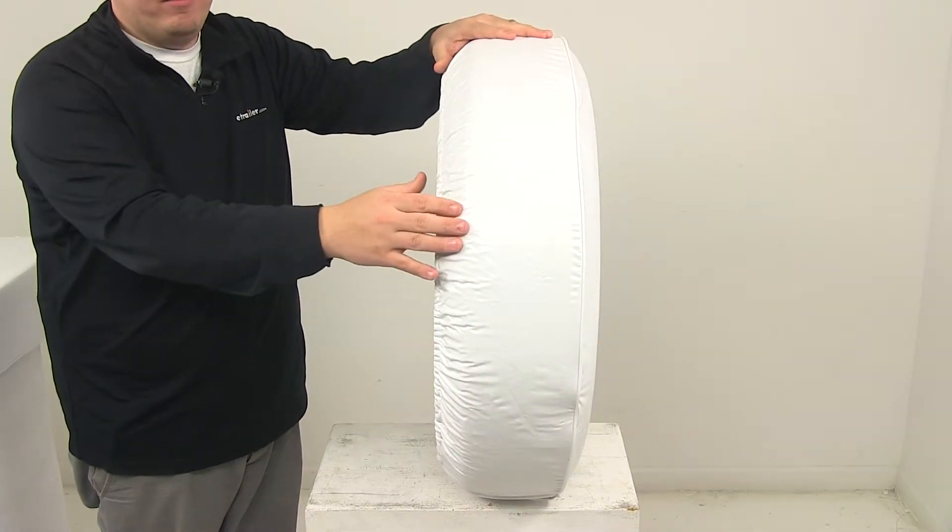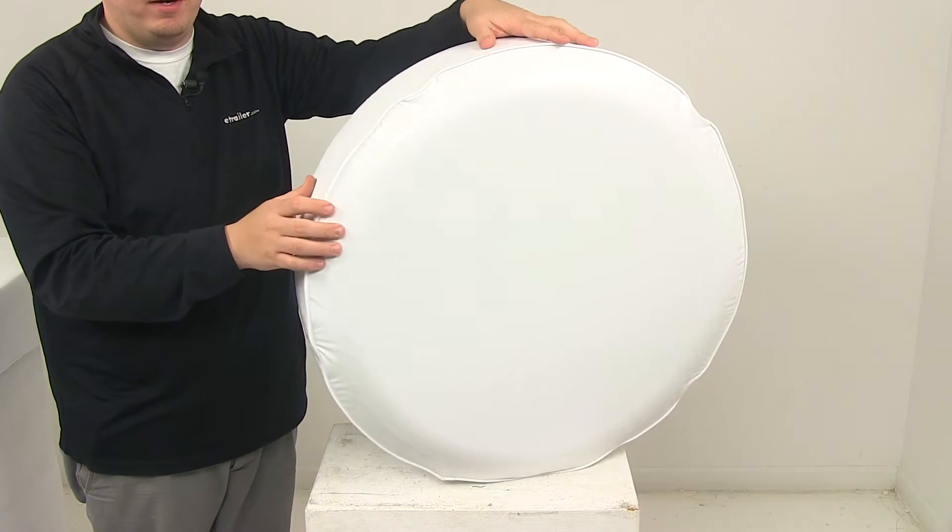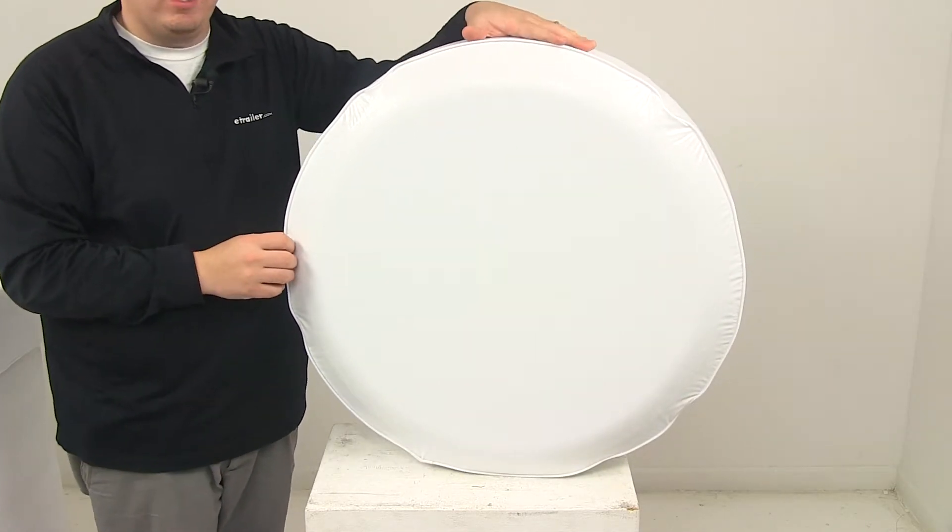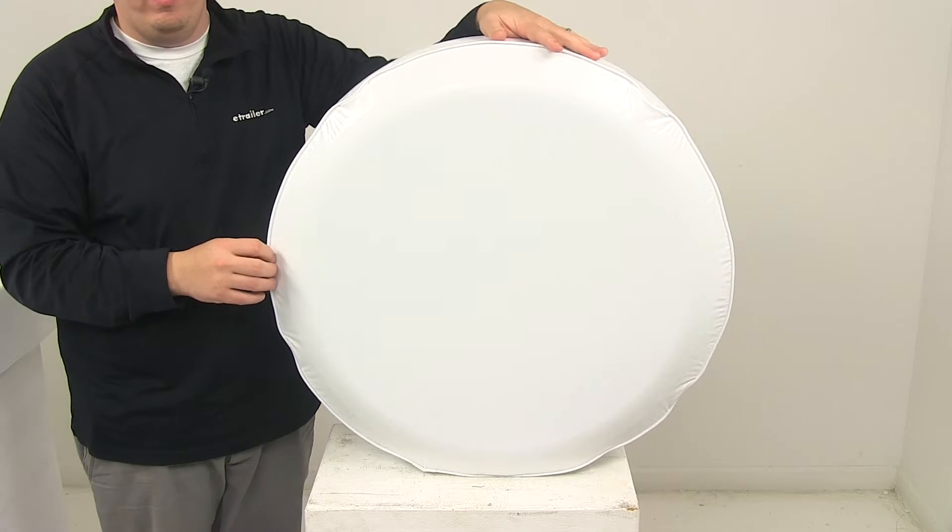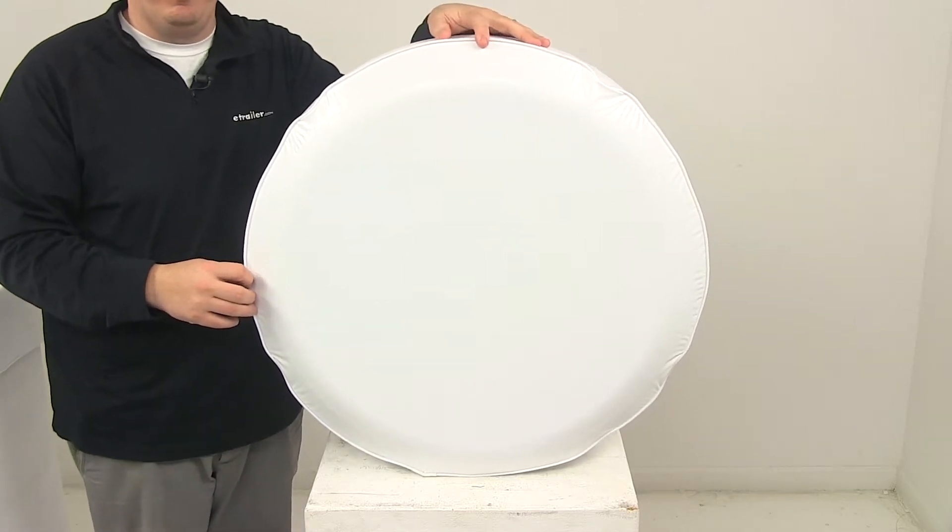To prevent the tire cover from being soiled or damaged by the spare tire, Adco suggests that you can wrap your tire with aluminum foil or cellophane wrap before you put the cover on the tire.